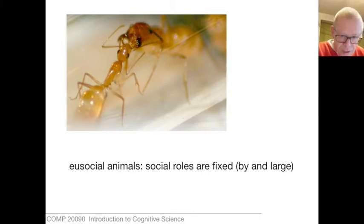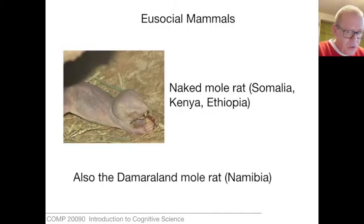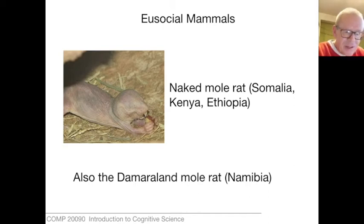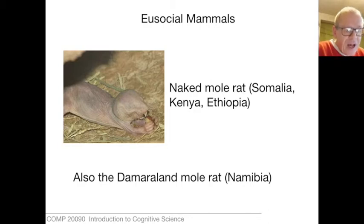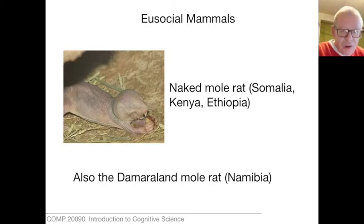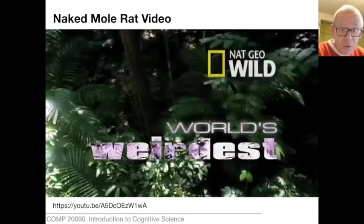There is actually one kind of mammal in which we find a eusocial order, showing that it doesn't have anything to do with having six legs on an insect body. It is called a naked mole rat — a few species found in Somalia, Kenya, Ethiopia, and Namibia. These live underground and have a eusocial order, quite unique among mammals, in which social roles are fixed. A queen is the childbearing individual. Let's have a look at a video of the naked mole rat.